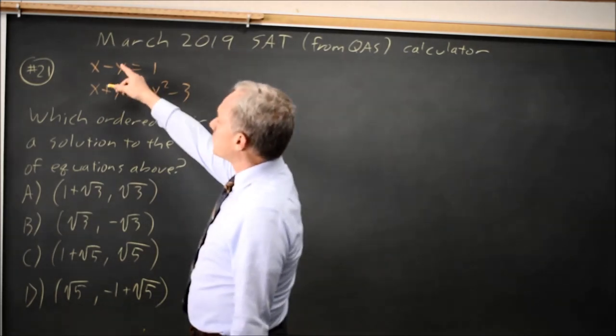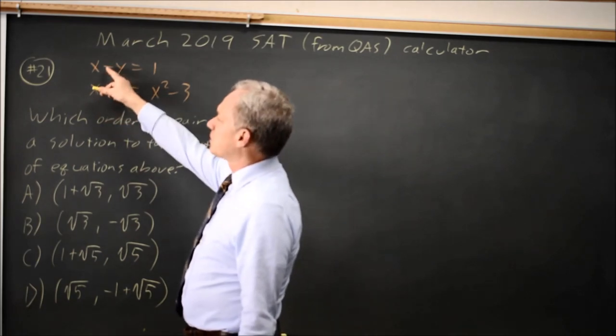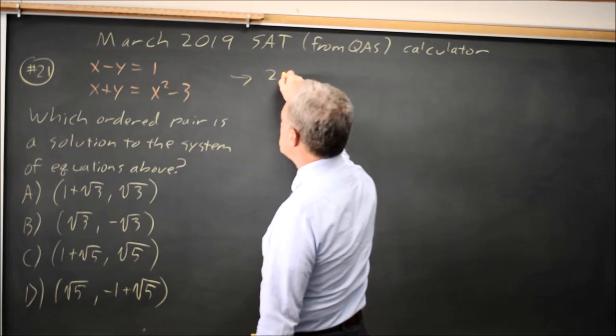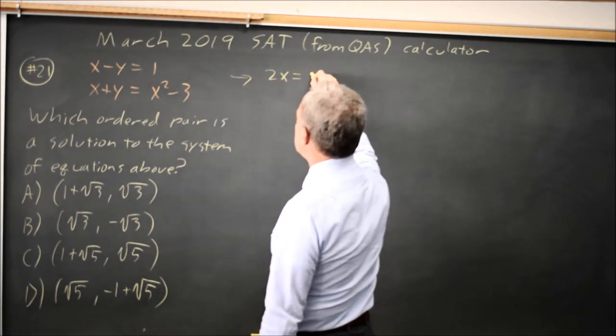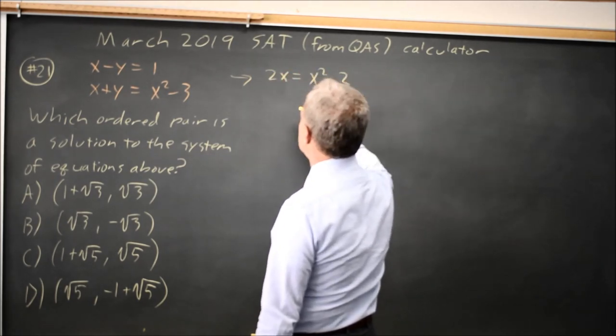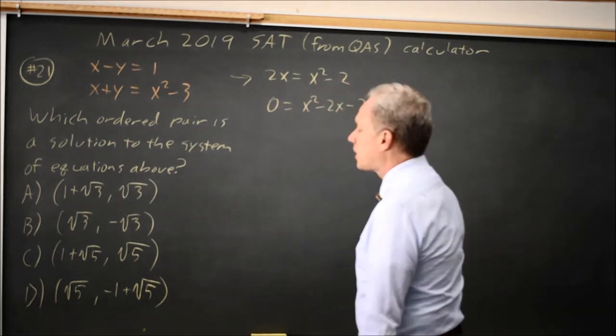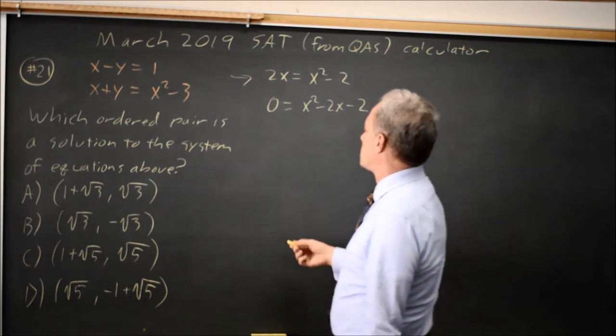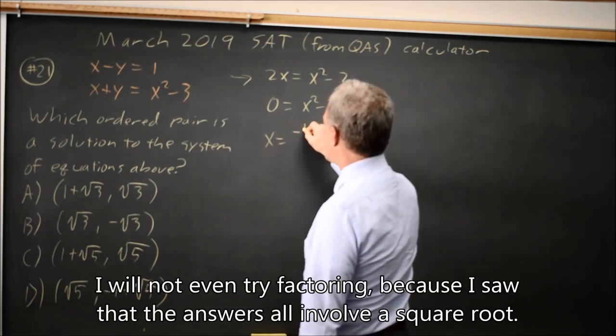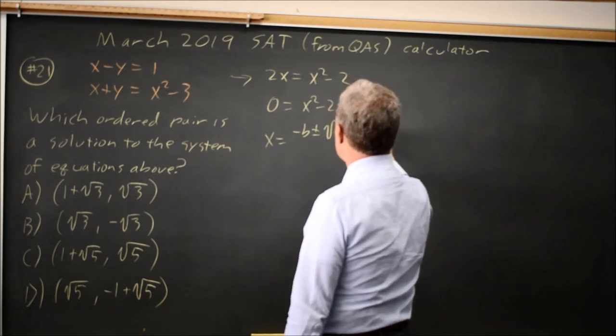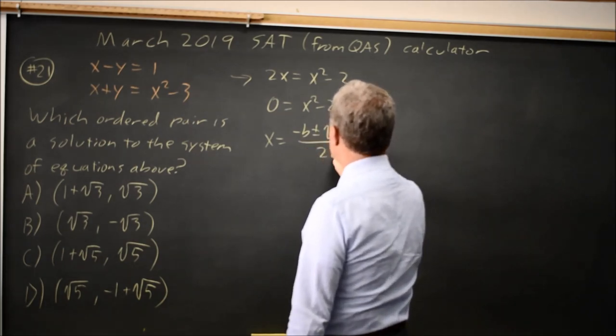Alternatively, I could add these two equations because if I add them, I see that the y's will cancel. Adding them gives me 2x on the left equals x squared minus 2 on the right, or 0 equals x squared minus 2x minus 2. And I can solve that with the quadratic formula. x equals negative b plus or minus square root b squared minus 4ac all over 2a.